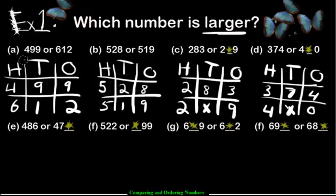So we have 499 and 612. Remember the rule — the number with the most hundreds is the larger number. We have a 4 here and a 6 here. This is automatically the winner. There's no need to jump to the tens and the ones, so 612 is the bigger number.